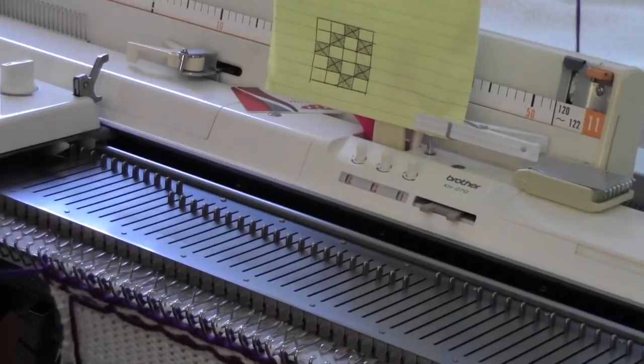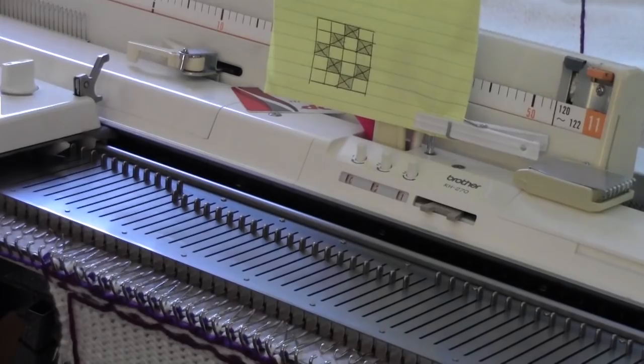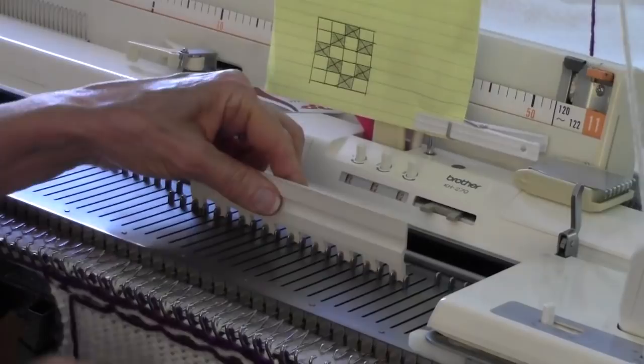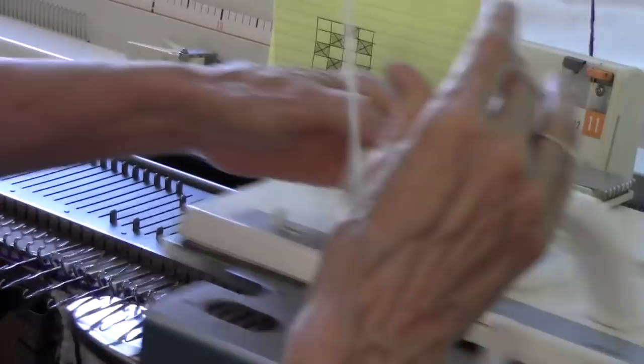To do the second half of the fourth row, I need to do a free pass. Just check my needles, make sure they're back. Go back over to the right and pick up that white yarn so I can do the second half of the fourth row. And now I'm going to get the second, fourth, and on across those stitches that I want to have white.